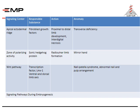Here are some signaling pathways during embryogenesis. The signal centers are: the apical ectodermal ridge, the zone of polarizing activity, and the WNT pathway. Each has a responsible substance, an action, and a resultant anomaly.